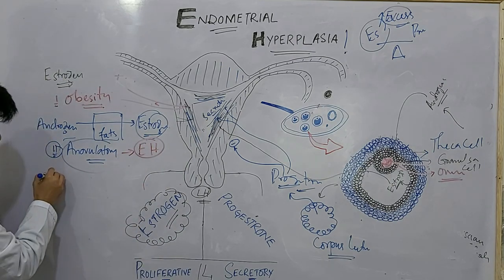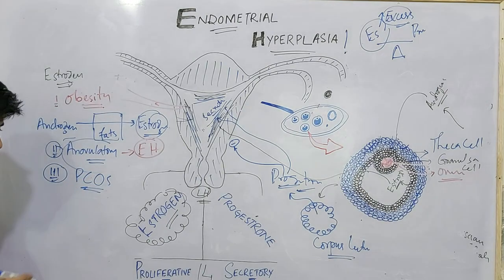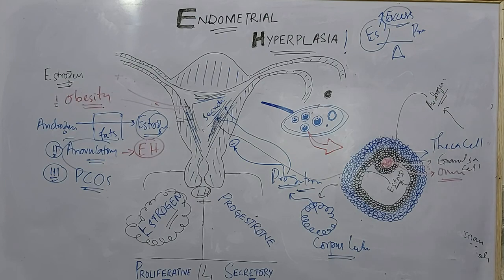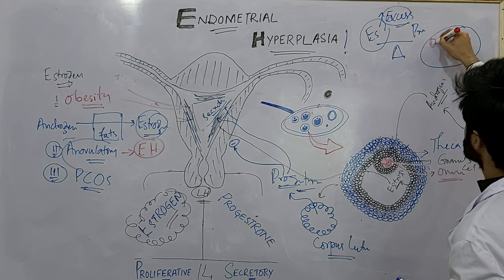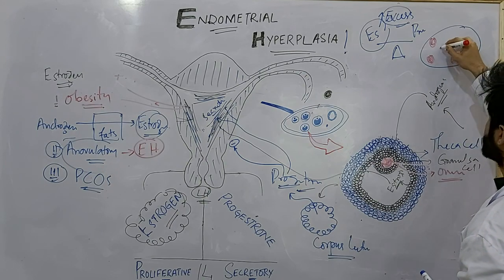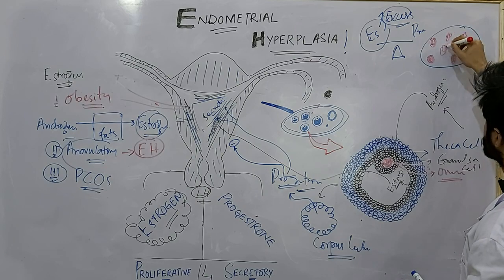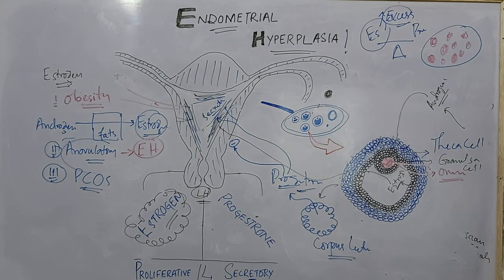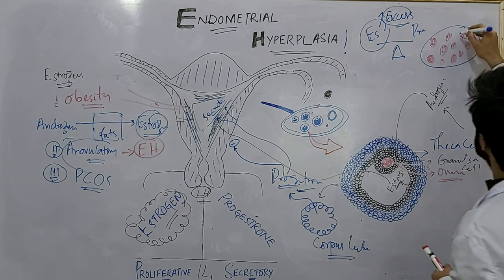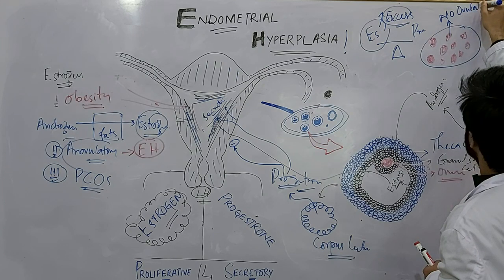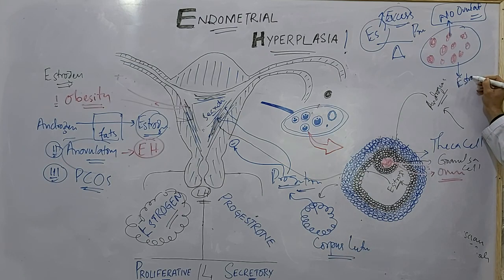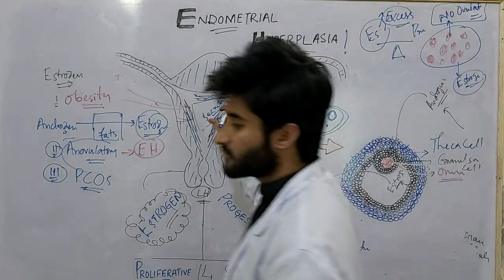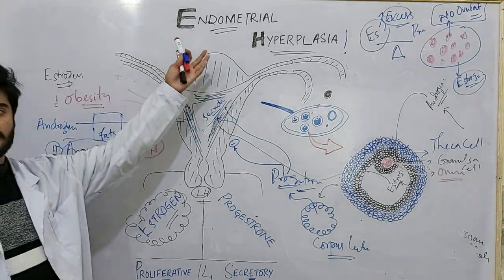The third risk factor is polycystic ovarian syndrome (PCOS). In PCOS, the ovary has lots of cysts, and these cysts do not ovulate, resulting in chronic anovulation. Because there is no ovulation, there is no progesterone. However, these cysts do produce estrogen, and this chronic estrogenic stimulation causes the endometrium to proliferate — a predisposing factor for endometrial hyperplasia.